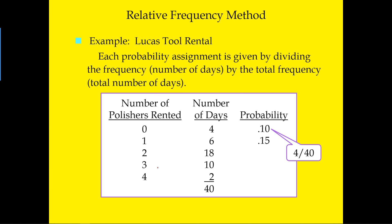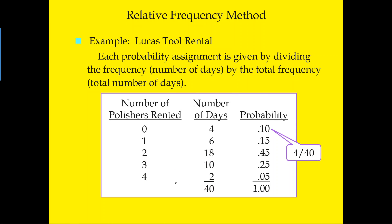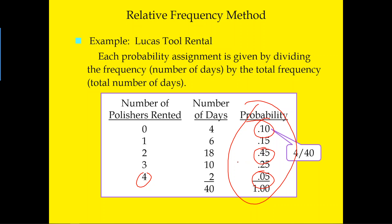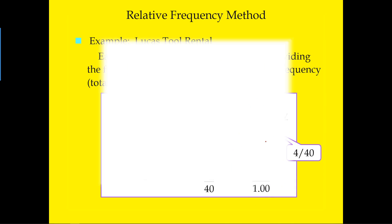That relative frequency is then treated as the probability. So for example, there is a 45% chance of renting two polishers in a day, a 5% chance of renting four polishers, and a 10% chance of renting zero polishers. This is the relative frequency method — it relies on repeated experimentation, in this case looking at the past 40 days of data.